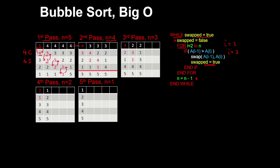Starting off with the list obtained from the first pass and following the same process, you'll get 3 comparisons and 3 swaps. Then in the third pass, the first 3 numbers are compared, so you'd get 2 comparisons and 2 swaps. And then in the next pass, you'd get 1 comparison and 1 swap.